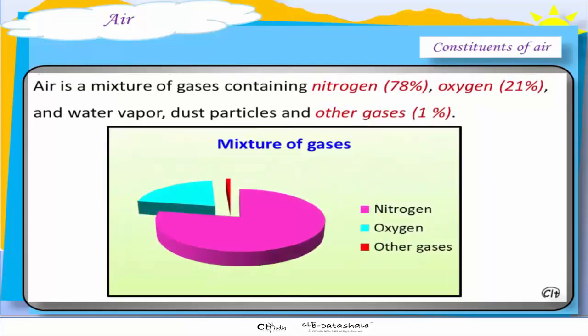As we learnt, air is a mixture of gases containing nitrogen which is 78%, oxygen which is 21% and the other gases like water vapor, dust particles and other gases make up for the rest.